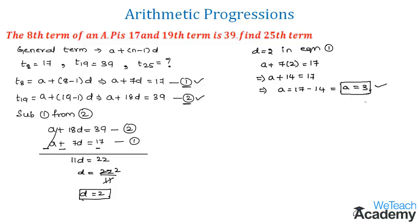Now we know the value of a and d. Let us find the 25th term using the formula of the general term. We get T25 as 3 plus (25 minus 1) times 2. This would come as 3 plus 24 times 2. That implies 3 plus 48. By adding 48 and 3, we get the value of the 25th term as 51.